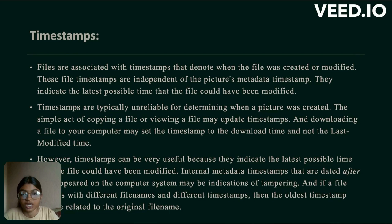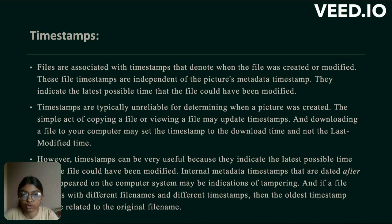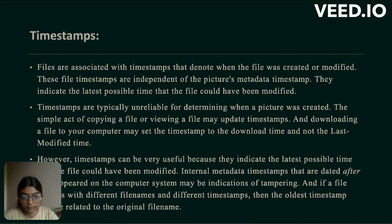Next is timestamps. Files are associated with timestamps that denote when the file was created and modified. These file timestamps are independent of the picture's metadata timestamp and indicate the latest possible time that the file could have been modified. Timestamps are typically unreliable for determining when a picture was created, as copying or viewing a file may update the timestamp, and downloading a file may set the timestamp to the download time. However, timestamps can be very useful because internal metadata timestamps dated after they appear on the computer system may be an indication of tampering.